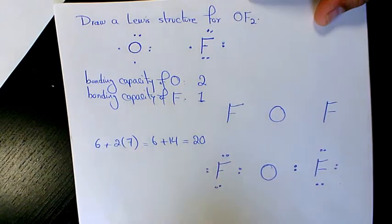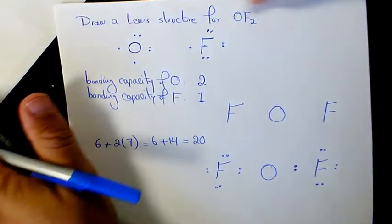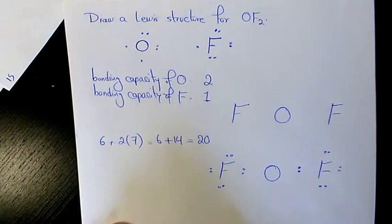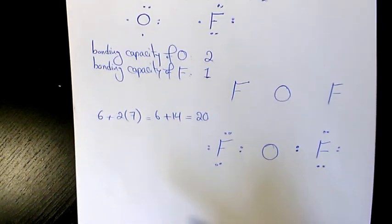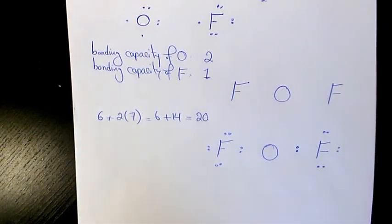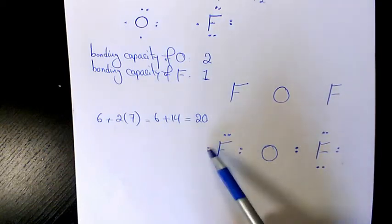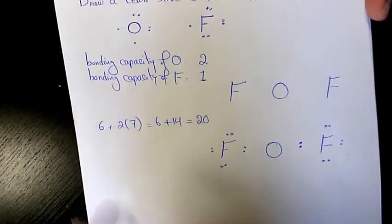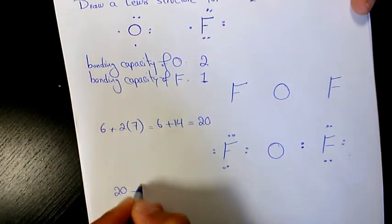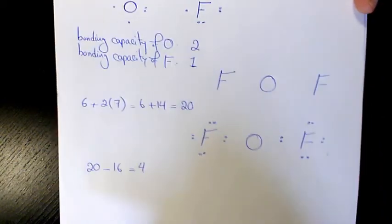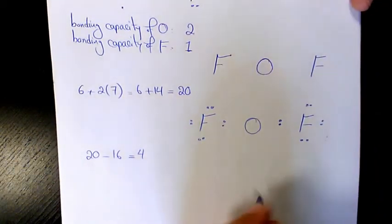Then what I need to do is basically determine how many electrons are still available. So we need to count all the used electrons: 1, 2, 3... 16. So we have twenty minus sixteen, so we still have four electrons. These four electrons we need to place on the central atom.